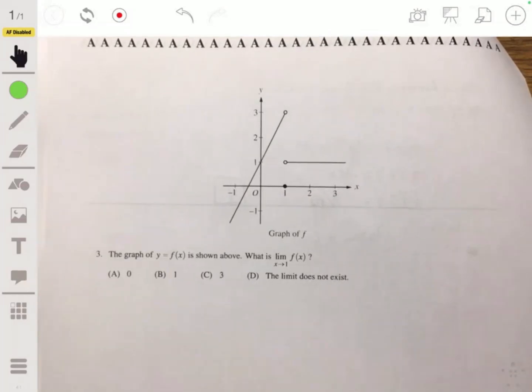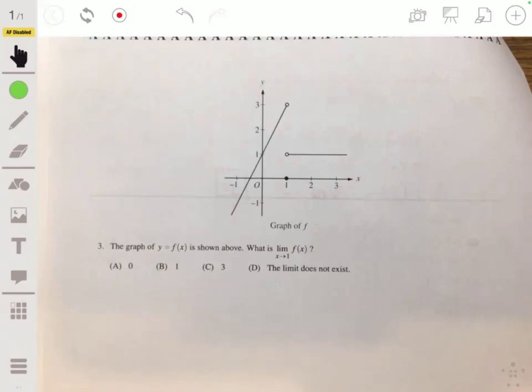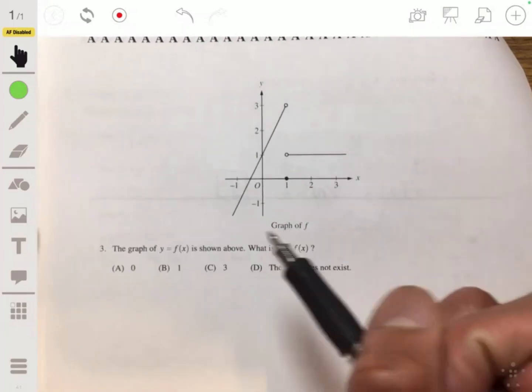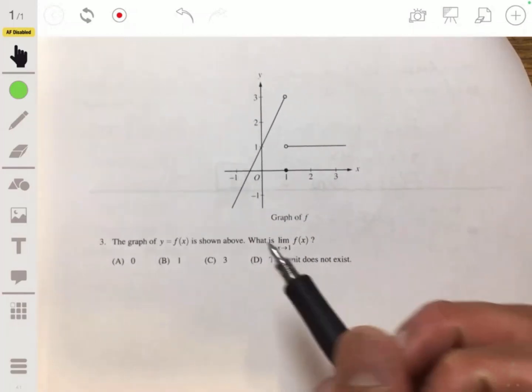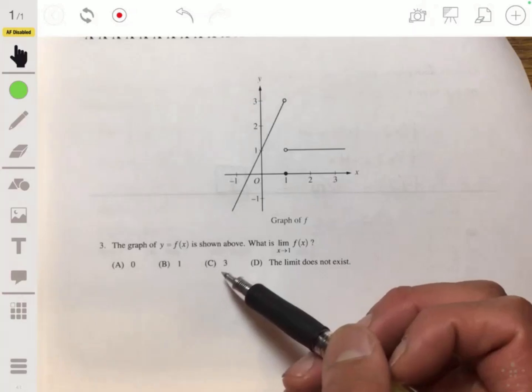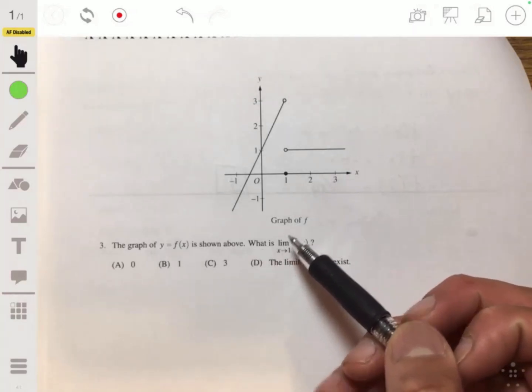And then our problem 3. Yeah, I just had to adjust the lighting in case you were wondering. Okay, so here we have the graph of y = f(x), and we need to find the limit of f(x) as x approaches 1.